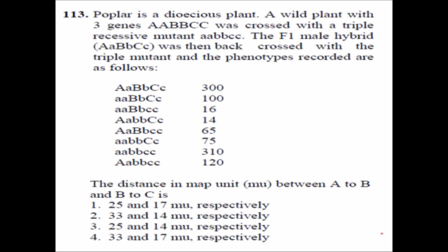So let's see how to solve this question. The question is that a wild plant with three genes, all in the homozygous dominant form, was crossed with a triple recessive mutant a, b, and c. The F1 hybrid in heterozygous form was then back-crossed with the triple mutant and the phenotype recorded as follows.